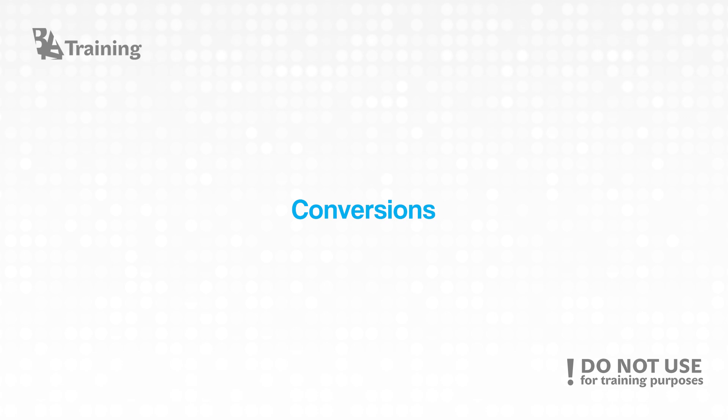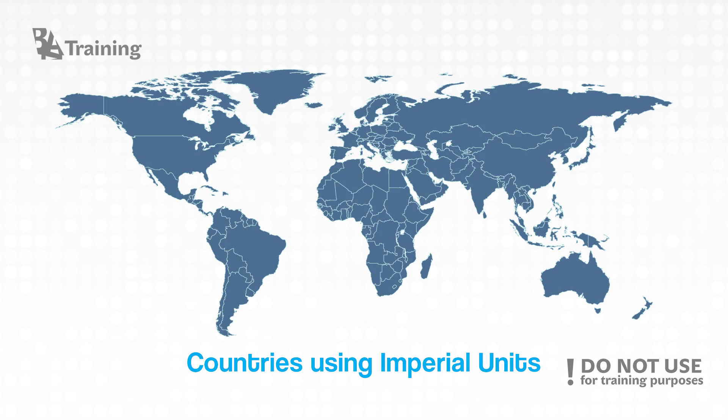Most of the countries in the world are using the metric system, however some of them are still using imperial units. Those few countries are Liberia, Myanmar and of course the United States of America.